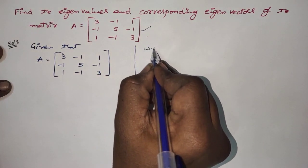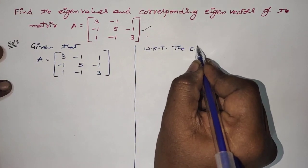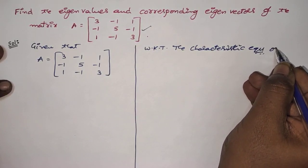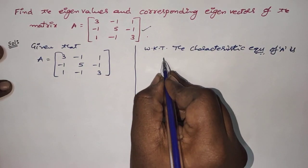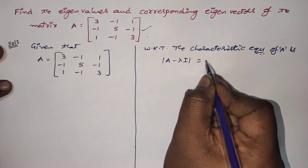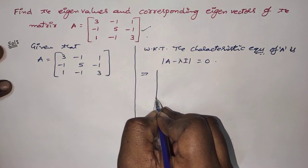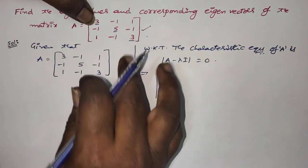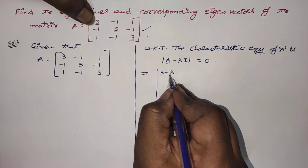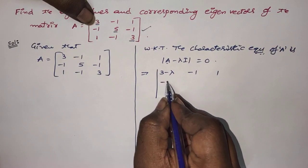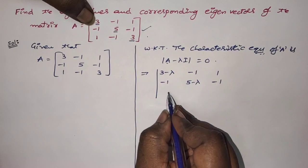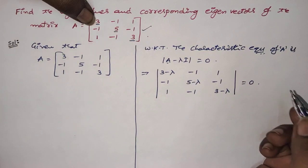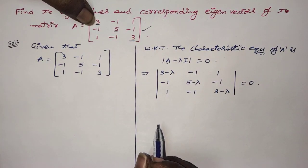What is the form of our characteristic equation? We know that the characteristic equation of matrix A is: determinant of (A minus lambda I) is equal to 0. So, determinant of A minus lambda I means I just subtract the diagonal elements with lambda; remaining are all the same. So, 3 minus lambda, minus 1, 1; minus 1, 5 minus lambda, minus 1; 1, minus 1, 3 minus lambda, equals 0. This is the form of our characteristic equation.